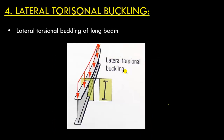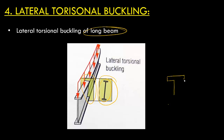Another mode of failure is lateral torsional buckling. Lateral torsional buckling generally occurs in long beams. When a long beam is loaded uniformly, the beam deflects laterally as well as rotates — so there is both twisting and lateral shifting. Looking at one cross-section of the beam, this part has laterally shifted and also rotated. Initially the beam cross-section was straight, but now the cross-section has shifted as well as rotated.